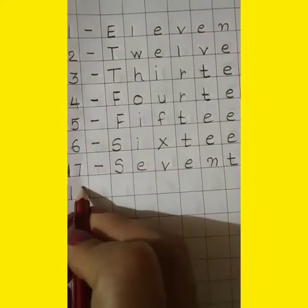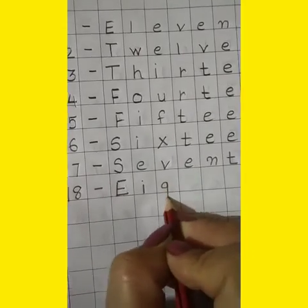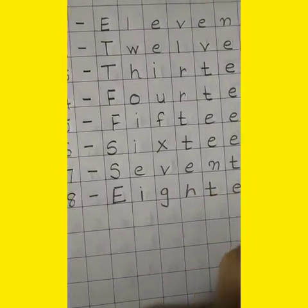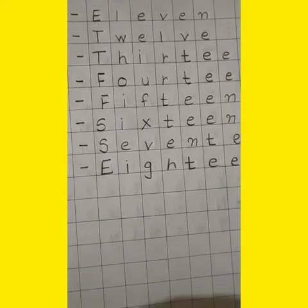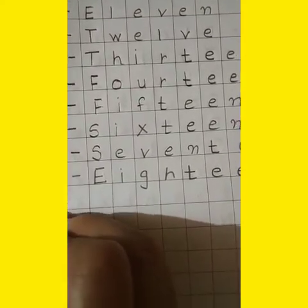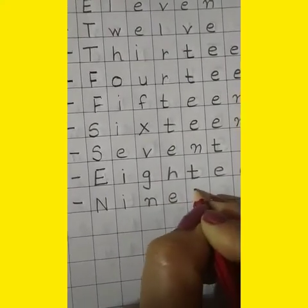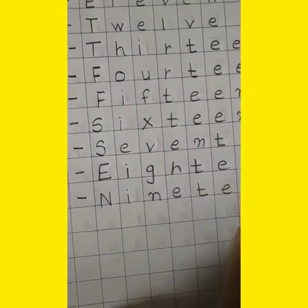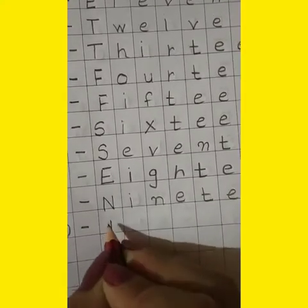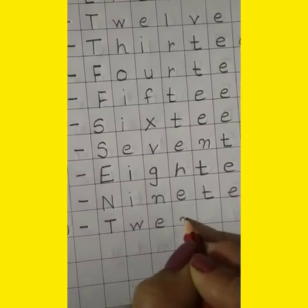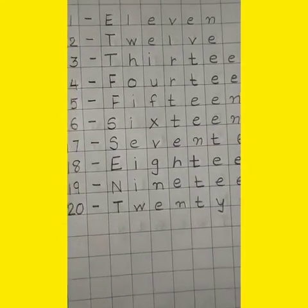17 after which number comes? 18. First letter should be capital — E-I-G-H-T-E-E-N. 18. After which number comes? 19 — N-I-N-E-T-E-E-N. 19. Then 19 after which number comes? 20 — T-W-E-N-T-Y. 20.